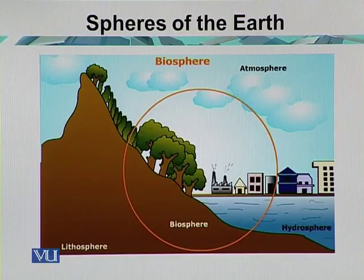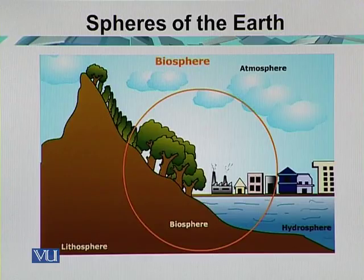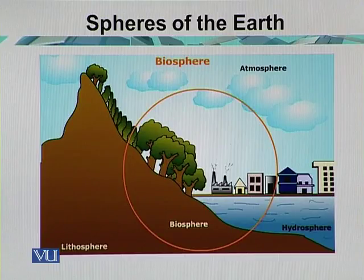The same is the case with the Lithosphere — it has interaction with the Hydrosphere, with the Biosphere, and with the Atmosphere. Among all the spheres, the Biosphere is the most important component of the planet, because it has the environment which is conducive for living. It has interaction with water, with the Earth's crust, and with the Atmosphere. All systems or spheres have interaction with each other, and they also have impact on each other.